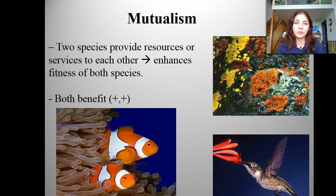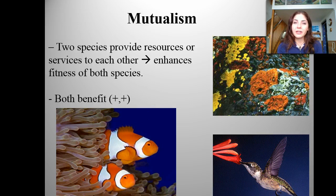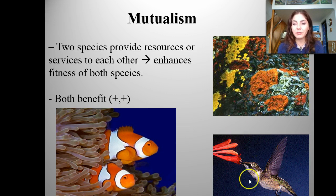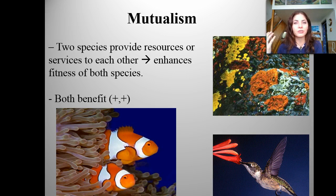The next type of relationship is called mutualism. This is when both species benefit — they're both going to gain something positive out of that relationship. The most common example is the clownfish and the sea anemone: the sea anemone provides protection for the clownfish, and the clownfish brings in food to give the sea anemone nutrition. We also have hummingbirds — the hummingbird takes nectar from a flower, benefiting by getting nutrition, then carries pollen to a different flower, helping that flower reproduce.